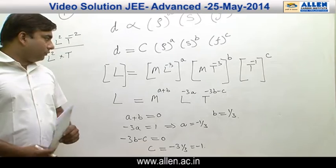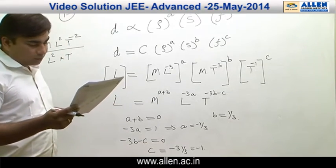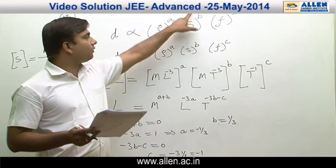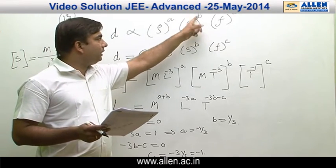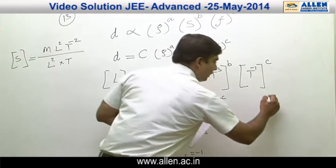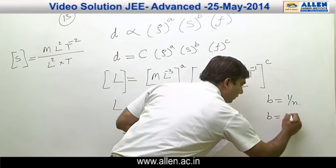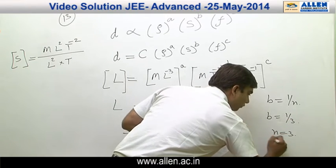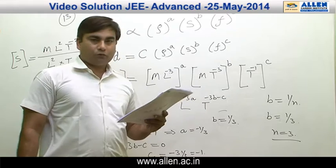All powers of the three terms a, b, c are now known. The question states that the engineer finds d is proportional to s to the power 1/n. That means b = 1/n, and b comes out to be 1/3. Hence comparing both terms, n is equal to 3. So the answer comes out to be 3.